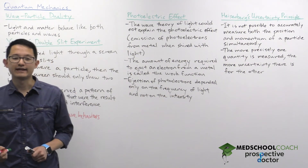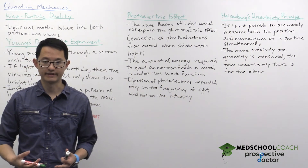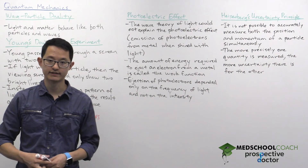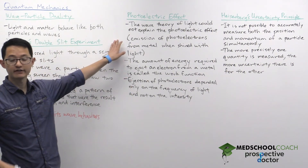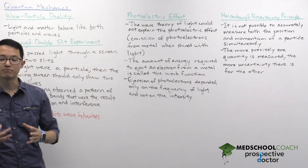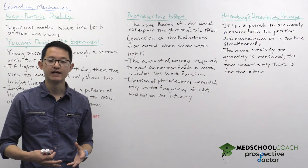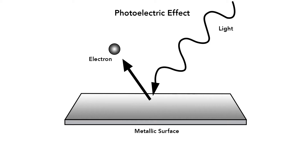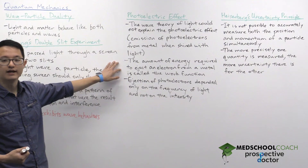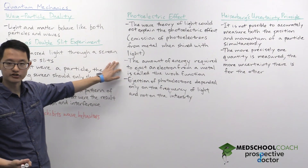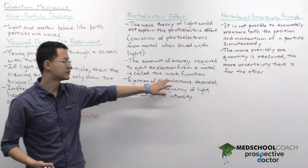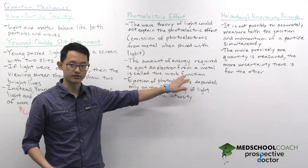Now let's look at a quantum mechanics experiment: the photoelectric effect. The photoelectric effect is a very interesting phenomenon where if you take metal and shine light on it, it's possible to eject electrons. Those electrons ejected by the light are called photoelectrons. It was known that in order to eject an electron you needed to supply a certain quantity of energy, and that amount of energy required to eject an electron was called the work function.